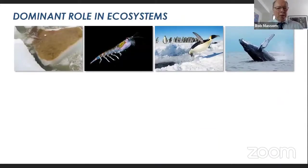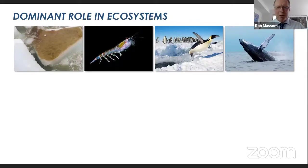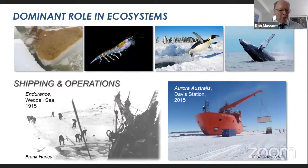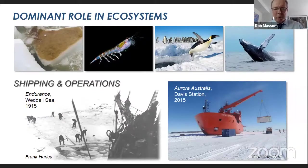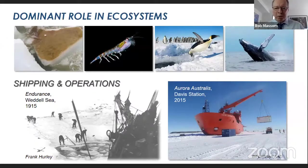Sea ice also plays a dominant role in marine ecosystems around Antarctica. It concentrates phytoplankton and microalgae into the ice, which forms a food source for krill, which then form a food source for penguins, whales, and seals. Sea ice can also impact shipping — it had a dramatic effect on Shackleton's endurance expedition of 1915, enclosing and eventually sinking the ship. And 100 years later, the Aurora Australis, the Australian icebreaker, is shown parked off Davis Station in East Antarctica, using sea ice as a landing bay to offload material to the station.